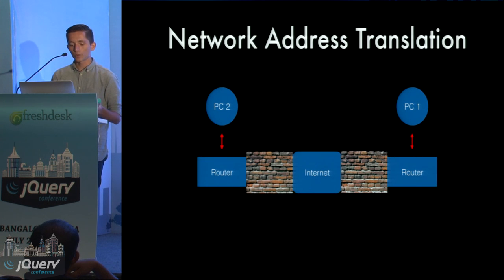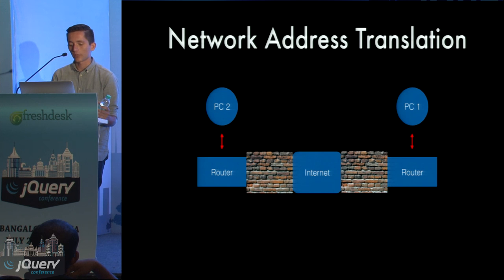PC1 can use a web browser to access a server on the internet, but a device on the internet can't access a server on PC1. This behavior basically breaks the whole idea behind WebRTC — setting up a direct line of communication between two devices. Every device in somebody's house is almost always going to be behind a home router, so this NAT situation affects around 90% of the people coming to your website.